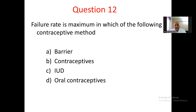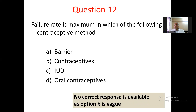Question number 12. Failure rate is maximum in which of the following contraceptive methods? A. Barrier, B. Contraceptives, C. IUD, D. Oral contraceptives. Reading the options again — option B is listed as 'contraceptives,' which is vague and not a specific method. Hence this question does not have a proper answer due to the vague option B. There cannot be a proper answer; therefore this question can be challenged.